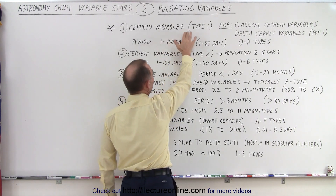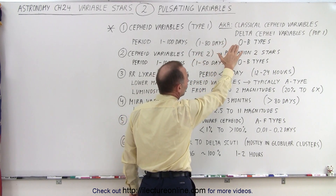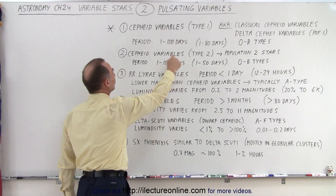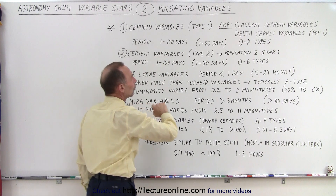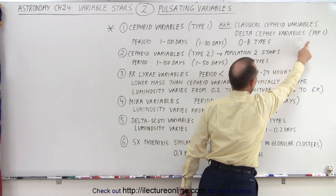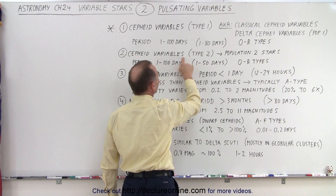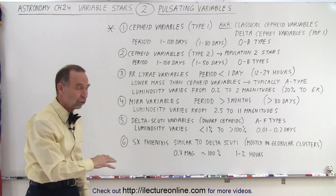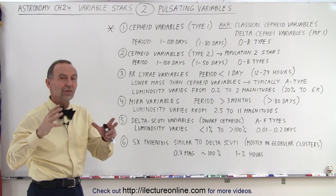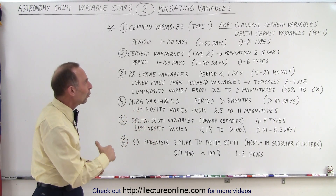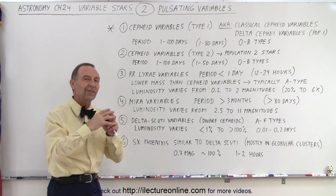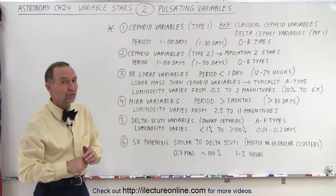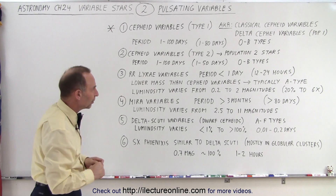Cepheid variables are also known as classical Cepheid variables or delta Cepheid variables. There are Type 1 and Type 2 Cepheid variables. Type 1 Cepheids are population 1 stars — more like the sun, containing more heavy elements. Type 2 Cepheids are population 2 stars, which are older stars with far fewer heavy elements, being almost 100% hydrogen and helium, versus population 1 stars that may have as much as 1% heavy elements.